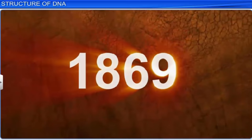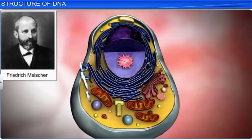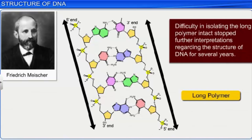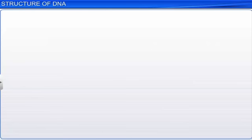It was in the year 1869 that Friedrich Miescher first identified DNA as an acidic material present in the nucleus, and called it the nucleon. However, technical limitations made it very difficult to isolate such a long polymer intact, and therefore no further interpretations regarding the structure of DNA were made for several years.